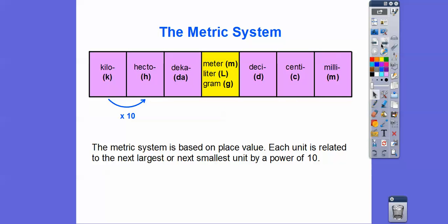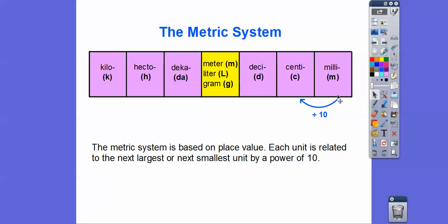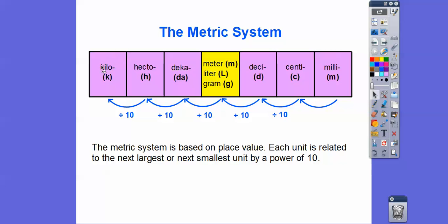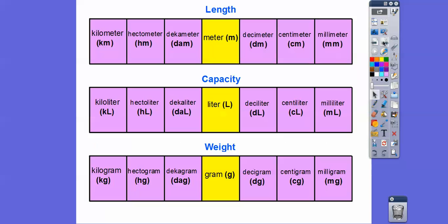If we start going to the right and take this number to the next, we multiply by 10 — that either moves the decimal to the right or adds a zero. Going right is times 10, times 10, times 10. Going from right to left, we divide by 10, keep dividing by 10 all the way to the left. So remember: smaller to larger, divide by 10; larger to smaller, multiply by 10.